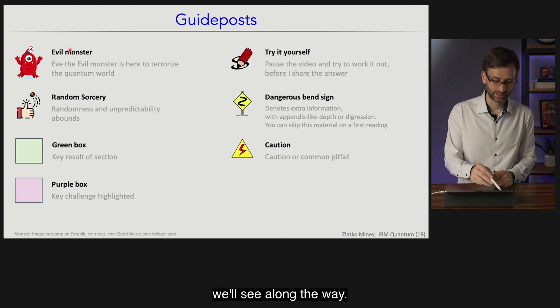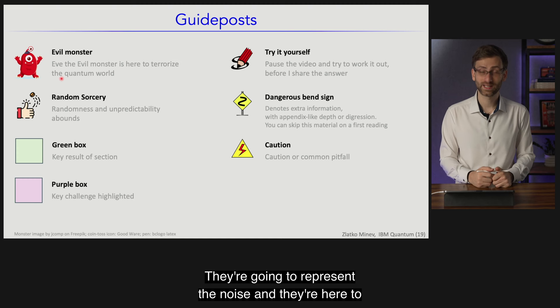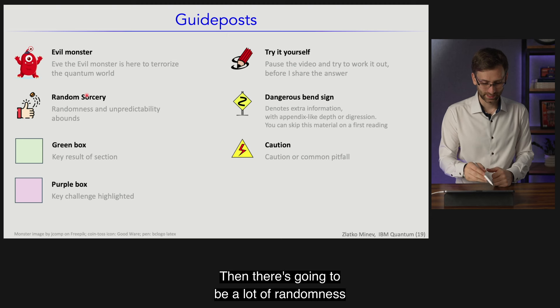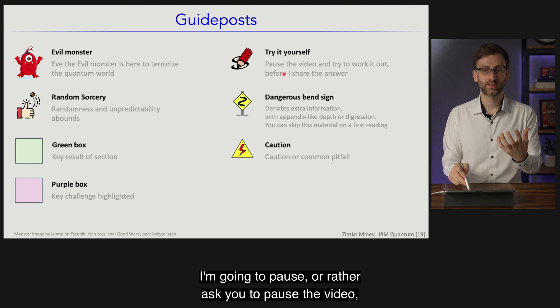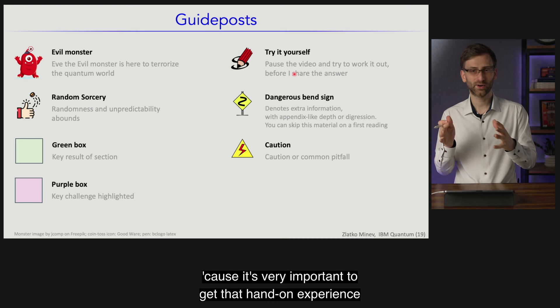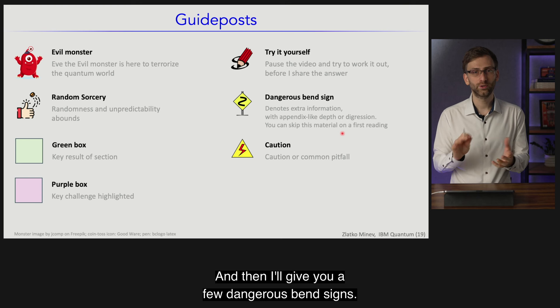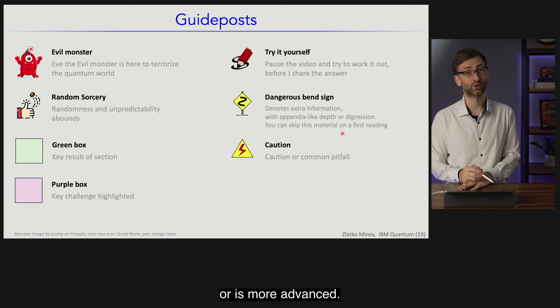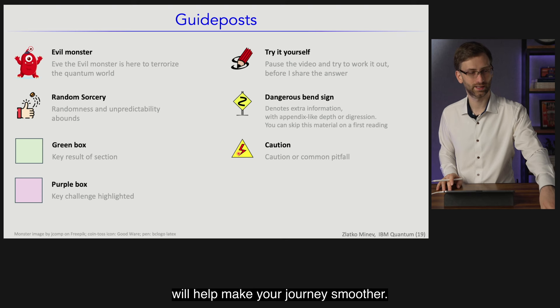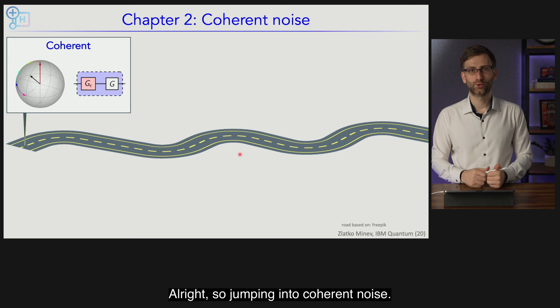Before we dive in, let's introduce some of the characters we'll see along the way. There are evil monsters representing noise to make our life more interesting. There'll be a lot of randomness — this will be our symbol for it. Main results and challenges are in these boxes. I'll pause and ask you to pause the video to try things before I show results, because hands-on experience is very important. I'll give dangerous bend signs for extra material not worth covering on a first pass, and finally common pitfalls and cautions. These guideposts will help make your journey smoother.